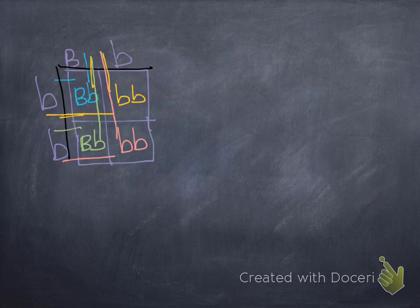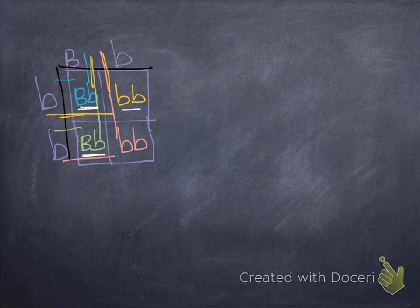So now we have to determine our genotypes and our phenotypes. Remember our genotypes are the letter combinations. So we've got four boxes and in this first box we have a big B, little b. And so how many other boxes do we have just like that one? We've got this box, so that's two. And then our other genotype is little b, little b. And how many boxes do we have like that? Another one there. So we've got two.